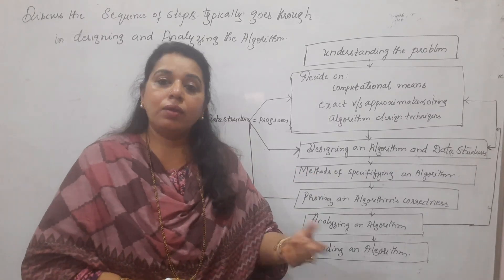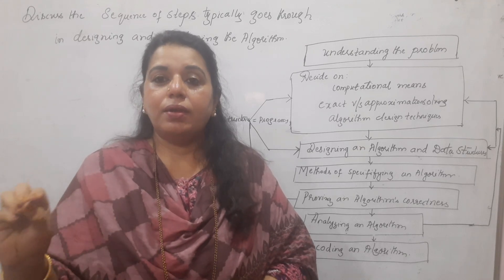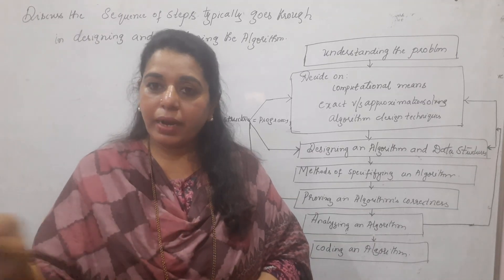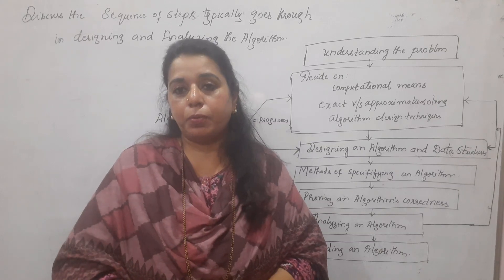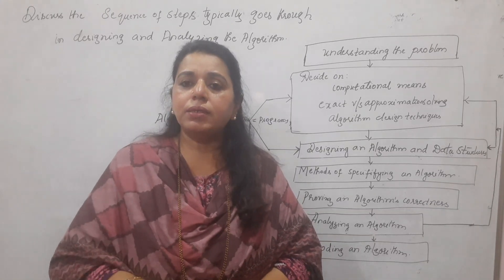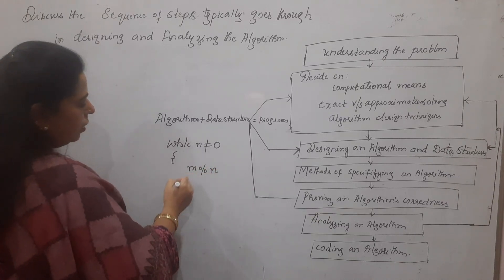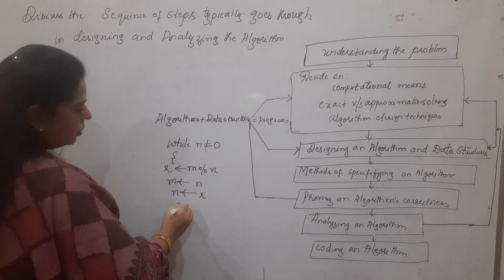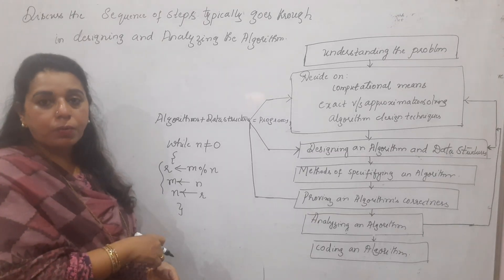Methods of specifying an algorithm include writing in natural language description — for example, for GCD of two numbers: step one, divide m and n; check the remainder; if not zero go to step so-and-so. Alternatively, you can use pseudo code, which is a mixture of natural language and programming language. For example, for GCD: while n ≠ 0, compute R = m mod n, reassign m = n, and n = R; once n equals zero, exit the loop.